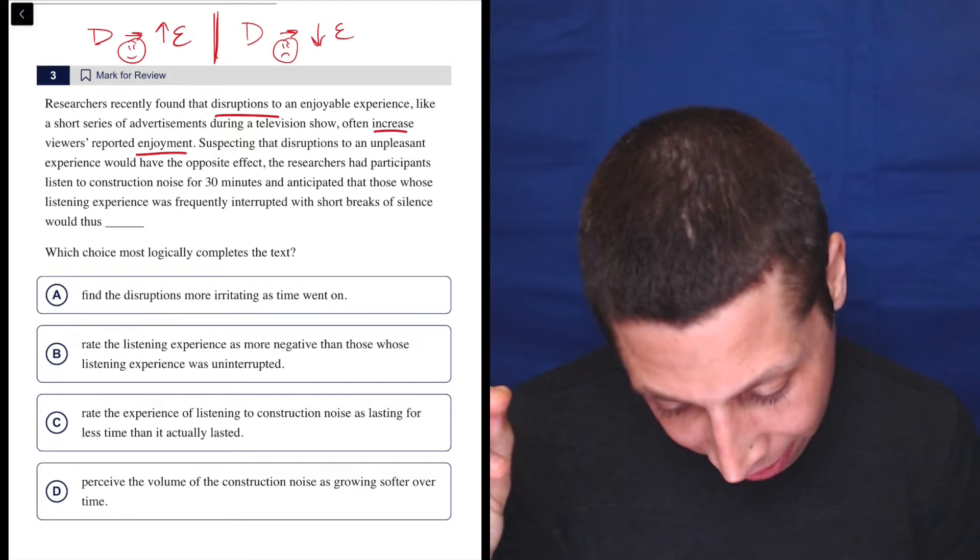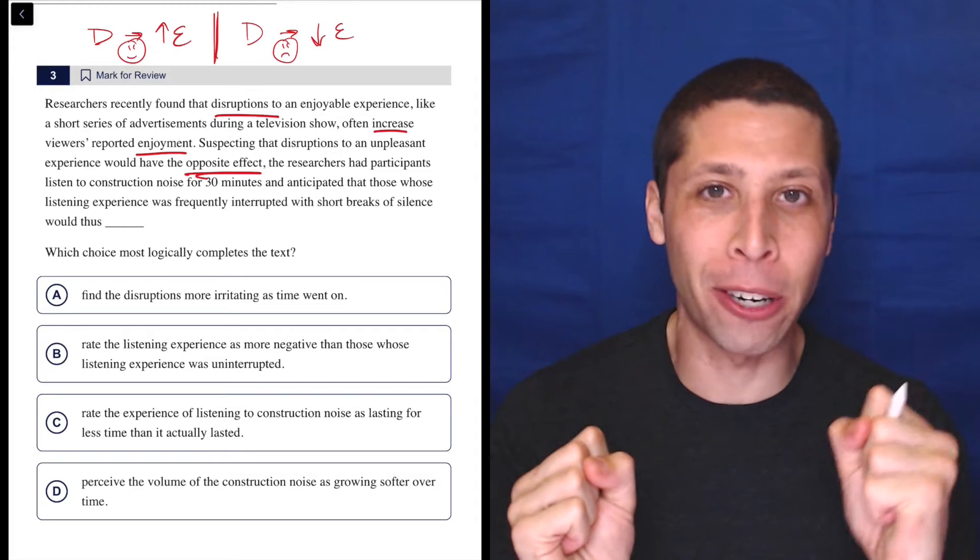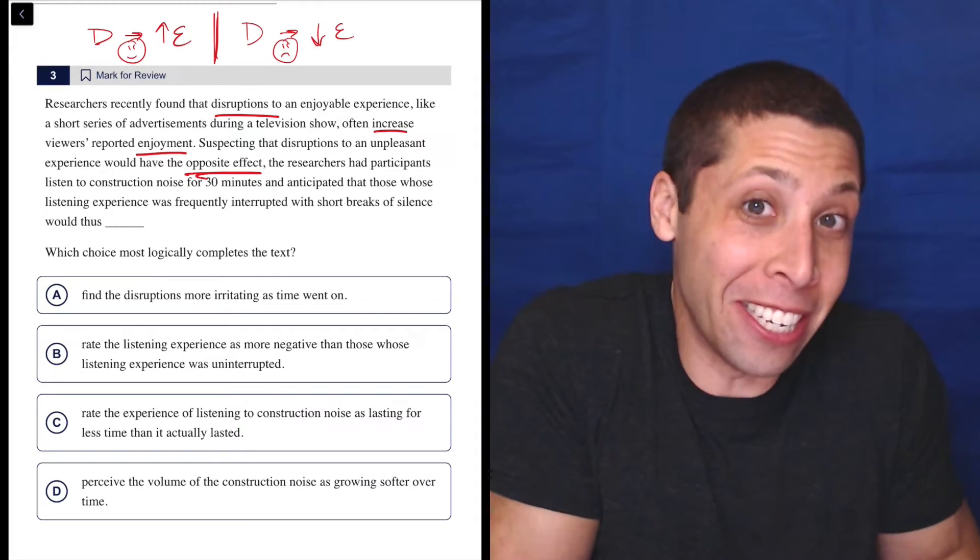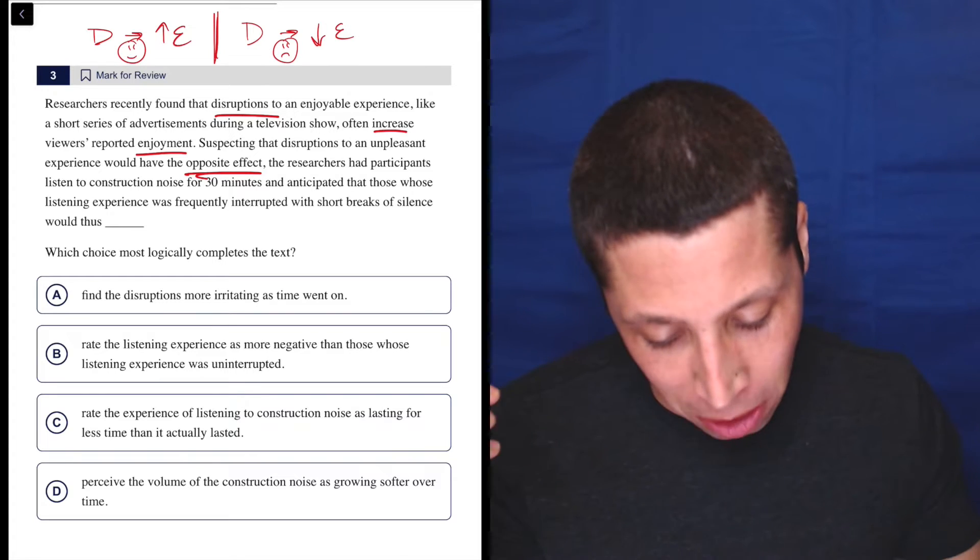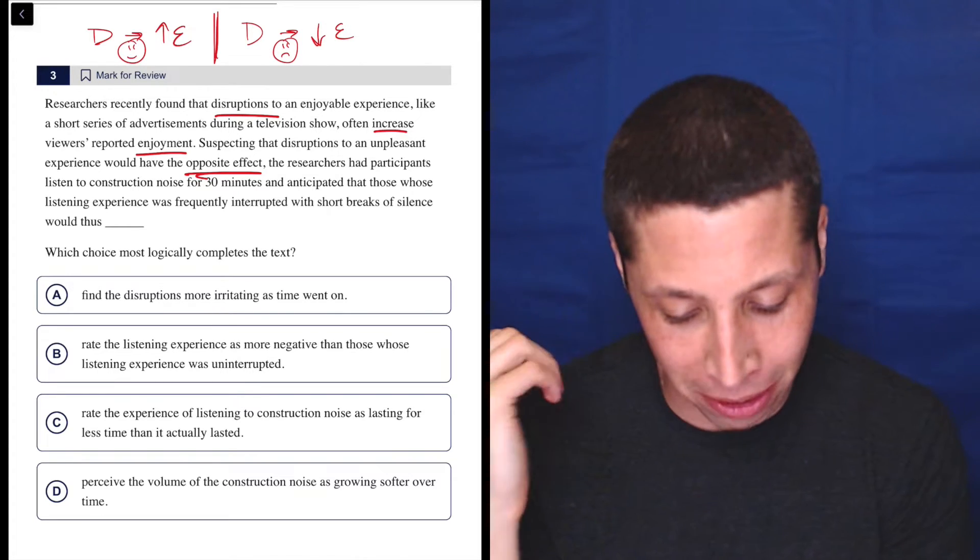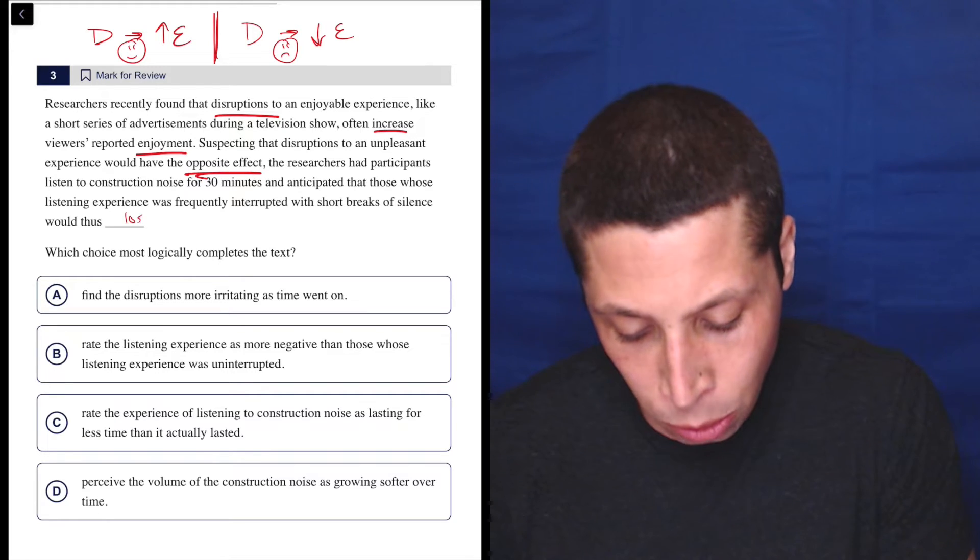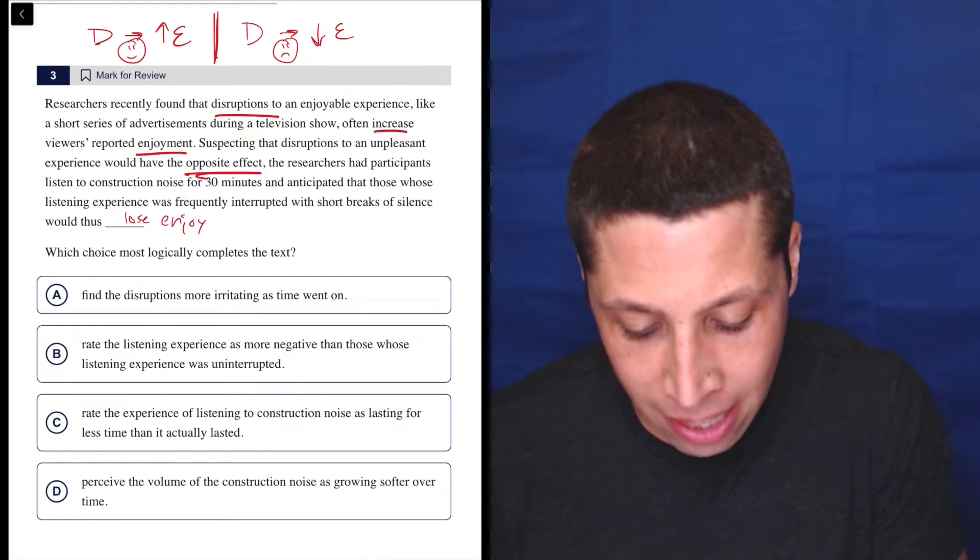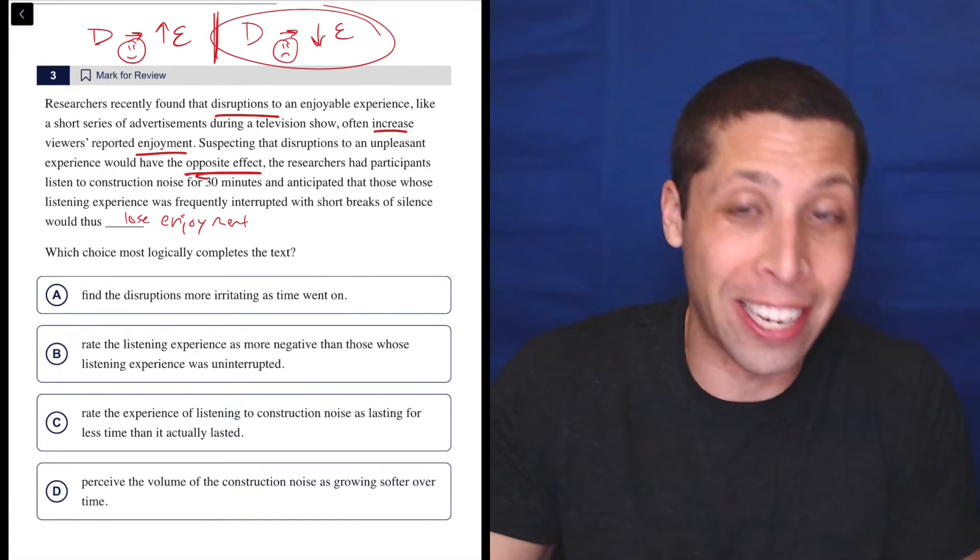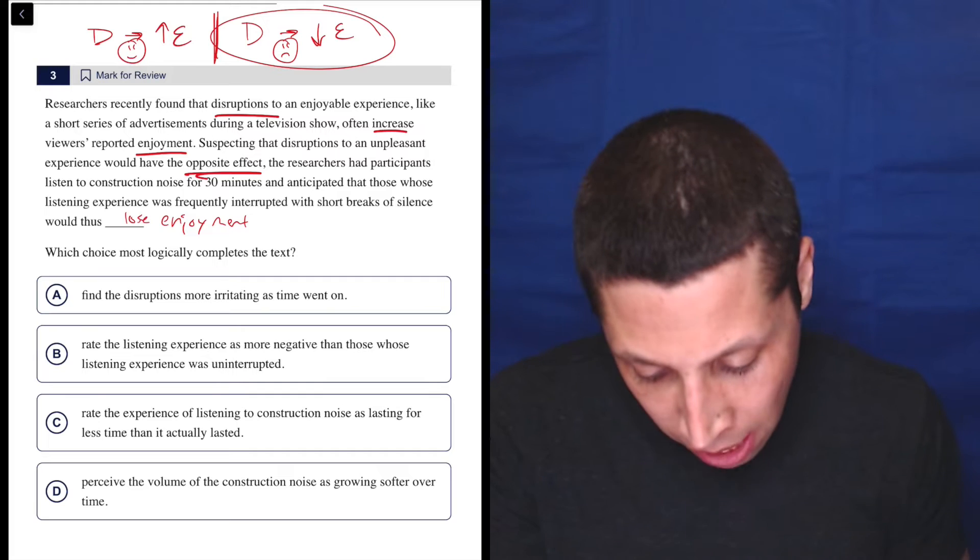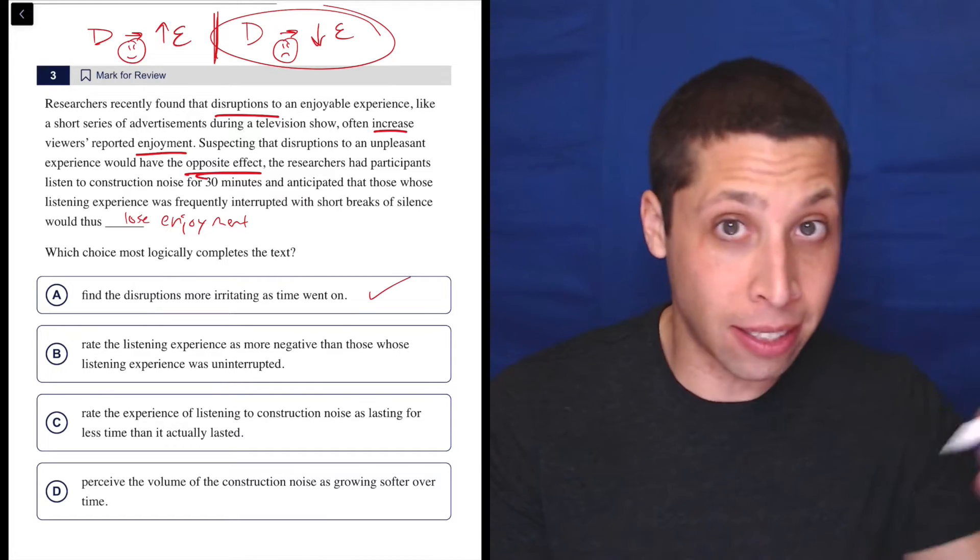Now notice they don't actually say that, right? They say it has the opposite effect. Because I have these ups and downs arrows, I can very easily show the opposite effect. The researchers have participants listen to construction noise for 30 minutes and anticipated that those whose listening experience was frequently interrupted with short breaks of silence would thus lose enjoyment. I can see where this is going because they're basically just summarizing and putting into better words my own summary. So let's see. A, find the disruptions more irritating as time went on. That seems good. Let's continue.